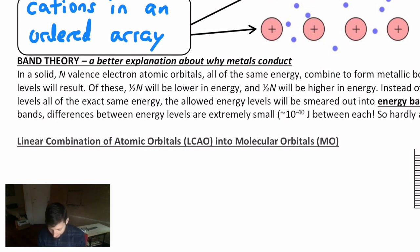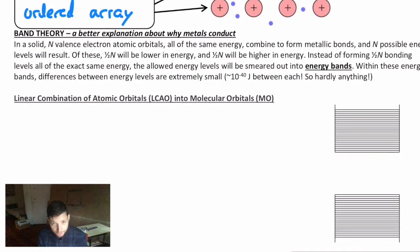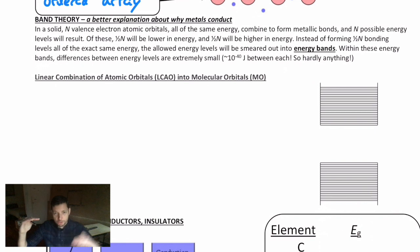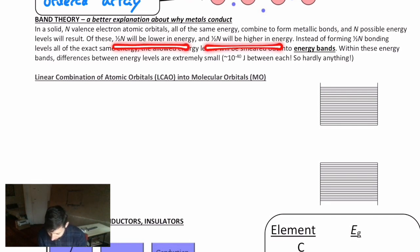So I'm just going to read this passage. It says in a solid we have N valence electron atomic orbitals all of the same energy. And they can combine to make metallic bonds and there are N possible energy levels that will result. It's very similar to how we had atomic orbitals combining to make a number of molecular orbitals. But here we're talking about metallic bonding in this array of cations surrounded by mobile electrons. But you will still have half of them lower in energy, what look like bonding, and half of them will be higher, what look like anti-bonding. And these create a band of energy gaps. I'll show you what I mean. And then it'll make more sense, I think, when we talk about conduction.